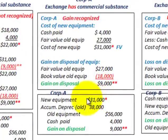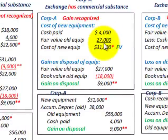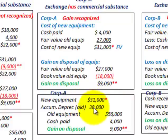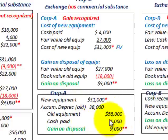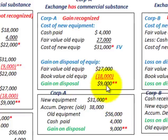So this is how we'd record this entry. For our new equipment, we would increase our new equipment account by the fair value of the exchange. Then we'd eliminate the accumulated depreciation on the old machine and remove the old equipment cost from our books. We'd reduce our cash account by the amount that was paid, and then we would also recognize the gain on the disposal, which would go on our income statement. Since the exchange has commercial substance, the gain is fully recognized.